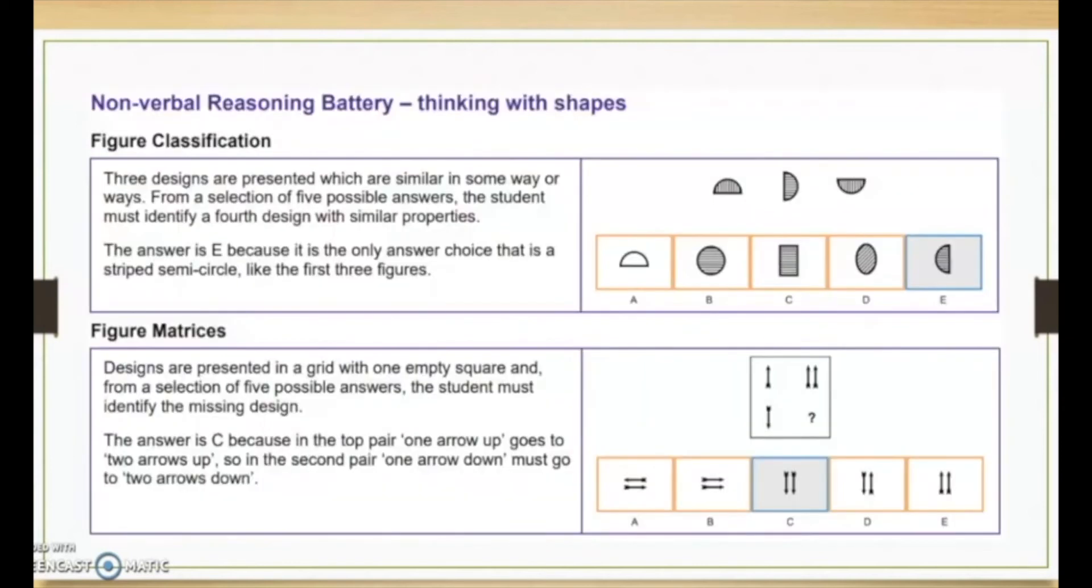So let's see what a nonverbal reasoning battery looks like. So this is thinking with shapes and we see in the top right hand corner. I'm just going to read that: three designs are presented which are similar in some way or ways. From a selection of five possible answers, the student must identify a fourth design with similar properties. So we could see they've chosen the answer E. The answer is E because it is the only answer choice that is a striped semi-circle like the first three figures.